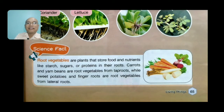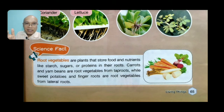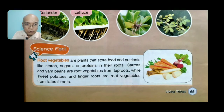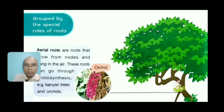Here is a science fact: root vegetables are plants that store food and nutrients like starch, sugars, or proteins in their roots. Carrots and yam beans are root vegetables from tap roots, while sweet potatoes and finger roots are root vegetables from lateral roots. Remember: lateral roots and tap roots.